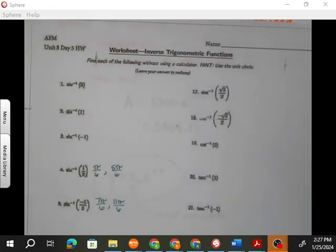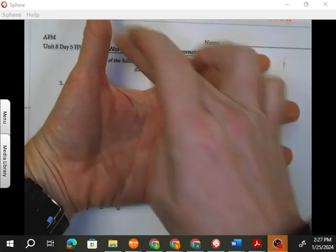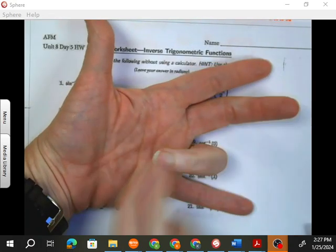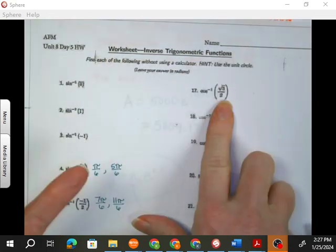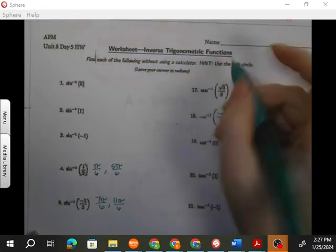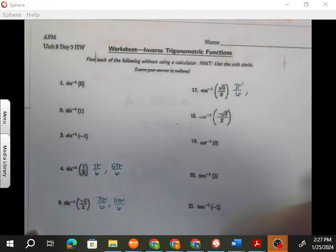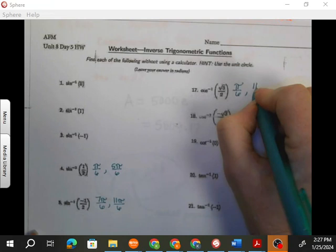So number 17. This is arc cosine of square root three over two. So cosine is x, which means I need three fingers on top. One, two, three. Hold this one in. Oh, I'm at the pi sixes again. The cosine is positive in one and four. So I need the, obviously, pi over six, because that's in quadrant one, and it's positive. And what's the pi six that's in quadrant four? Eleven pi over six.